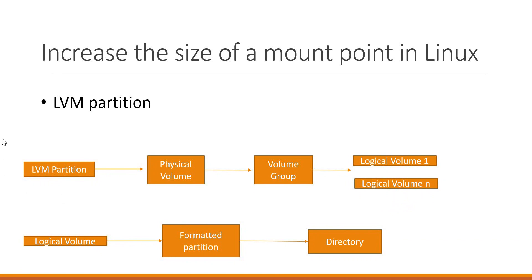In the diagram, we have an LVM partition. We have a disk, and we have made a partition out of the disk. In case of LVM, we will make a physical volume, and using this physical volume we will create a volume group, and then we will create multiple logical volumes out of this volume group. Once the logical volume is created, it will be formatted with a file system and that formatted partition will be mounted on a mount point.